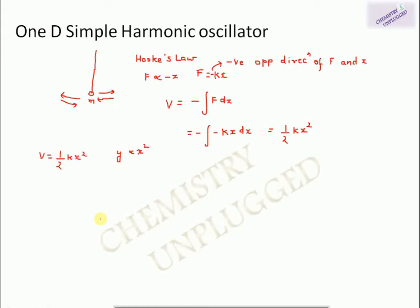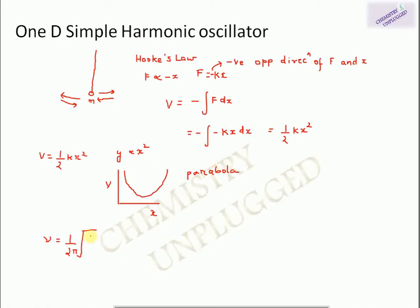This equation follows the pattern of y proportional to x², and in this type of graph the relationship between displacement x and potential energy V is represented by a parabola. The frequency of this oscillating particle is ν = (1/2π)√(k/m), where k is the force constant and m is the mass of the particle.